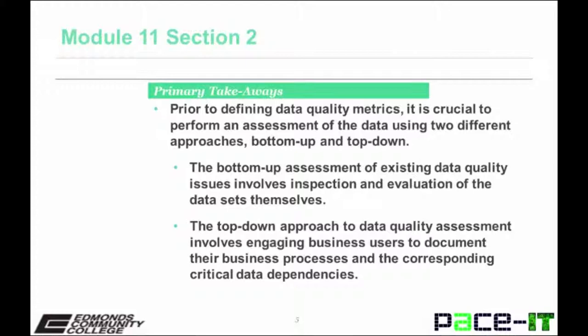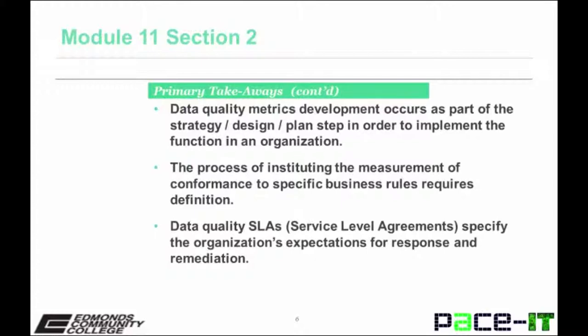Primary takeaways include the following: Prior to defining data quality metrics, it is crucial to perform an assessment of the data using two different approaches — bottom-up and top-down. The bottom-up assessment of existing data quality issues involves inspection and evaluation of the data sets themselves. The top-down approach involves engaging business users to document their business processes and the corresponding critical data dependencies. Data quality metrics development occurs as part of the strategy design plan step in order to implement the function in an organization. The process of instituting the measurement of conformance to specific business rules requires definitions.